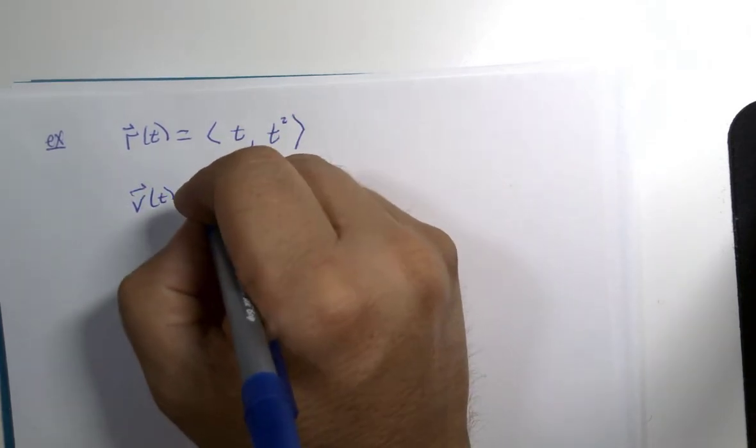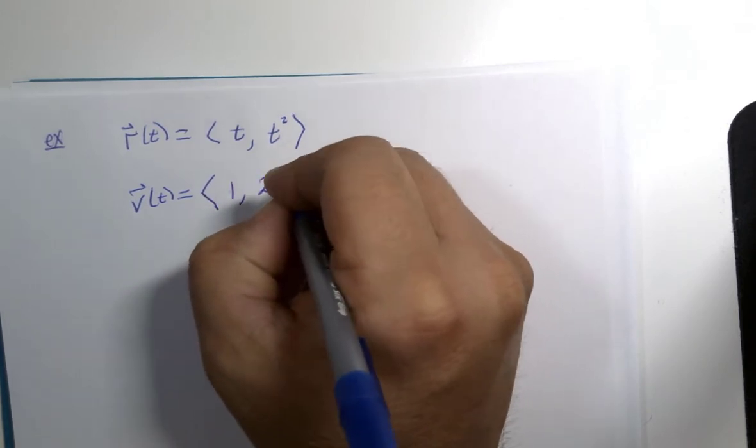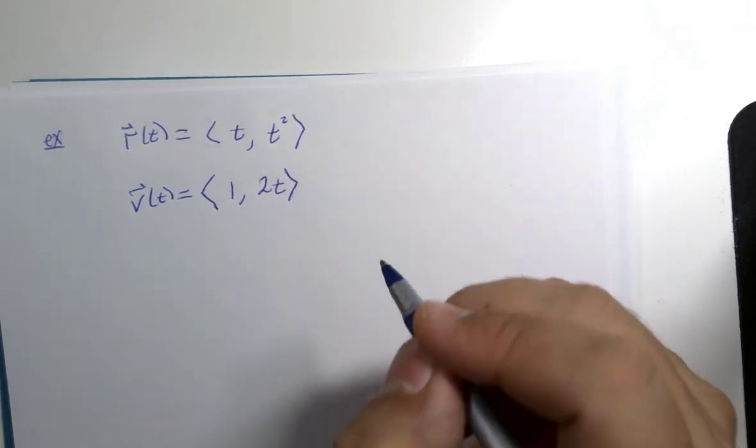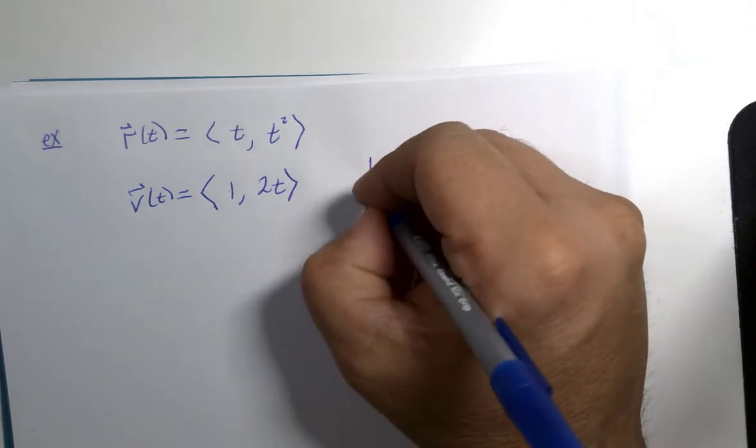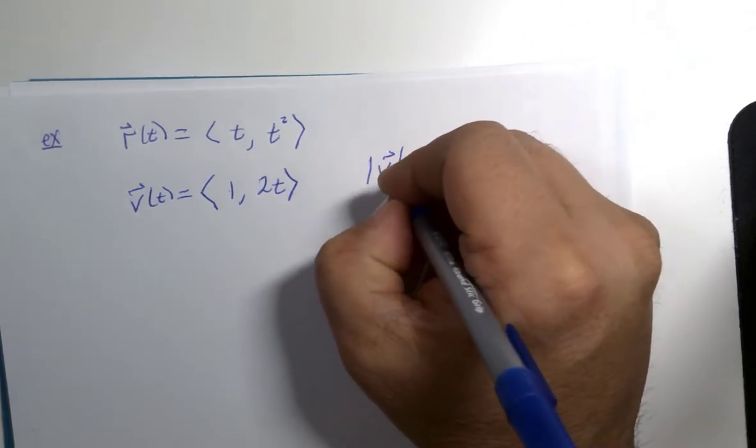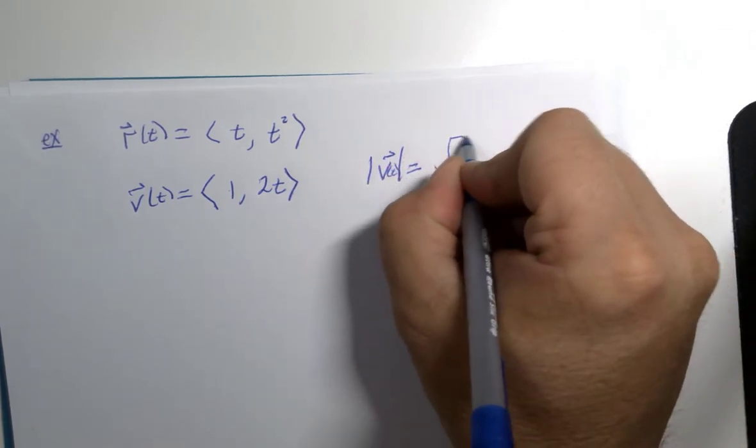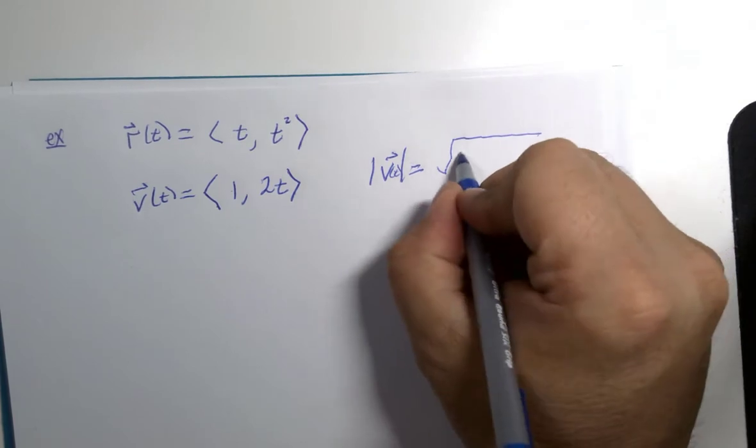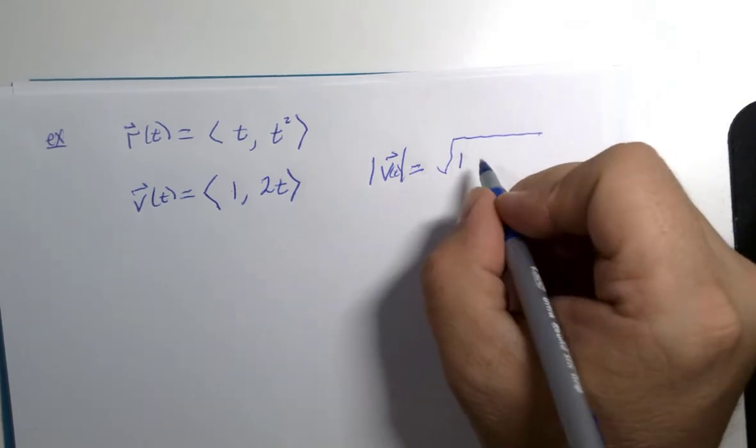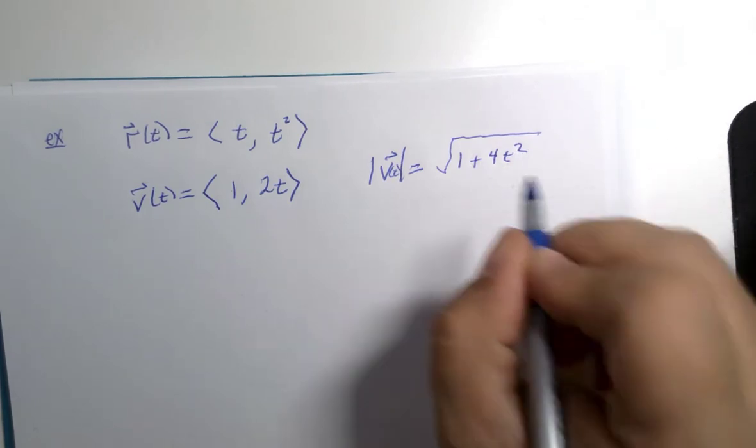So we need the velocity vector. And the velocity vector is <1, 2t>. That would be the first derivative. The magnitude of this vector at time t is the square root: 1 squared is 1, 2t quantity squared is 4t squared, square root of that.